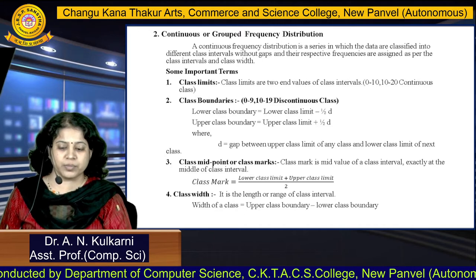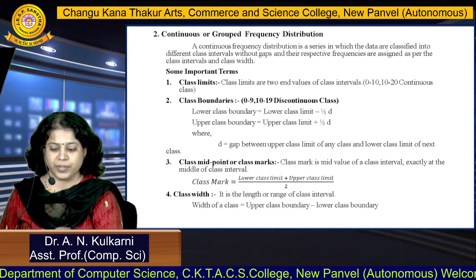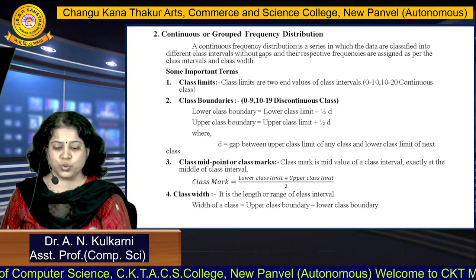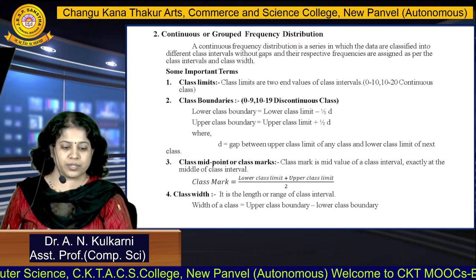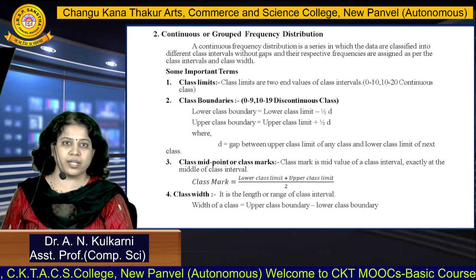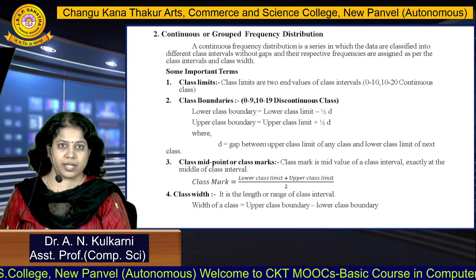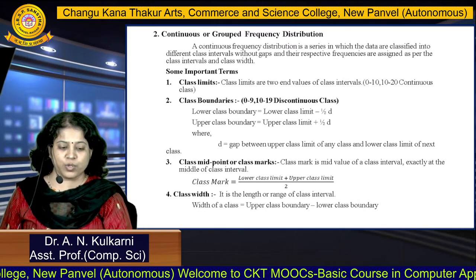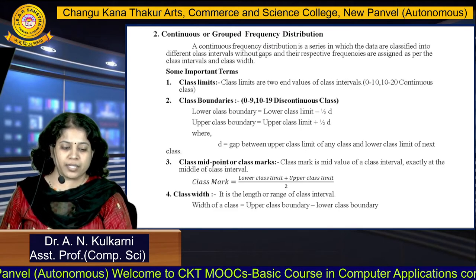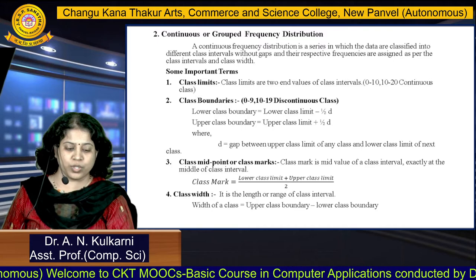The first important term under continuous frequency distribution is class limit. Class limits are the two end values of the class intervals. For example, classes like 0 to 10, then 10 to 20 — this is a continuous class because the upper limit of the previous class is 10 and the lower limit of the next class is 10, so there is no gap.